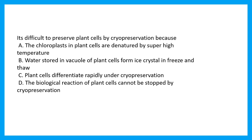It's difficult to preserve plant cells by cryopreservation because: the chloroplast in plant cells are denatured by super high temperature, water stored in the vacuole of plant form ice crystals and freeze due to freeze and thaw, plant cells differentiate rapidly under cryopreservation, or the biological reaction of plant cells cannot be stopped by cryopreservation. The correct answer is the water in the vacuoles can freeze and cause cryo damages.